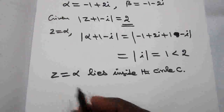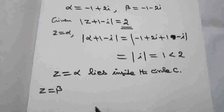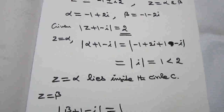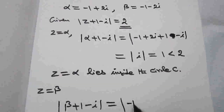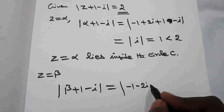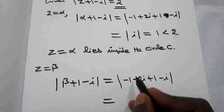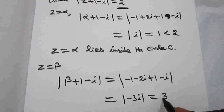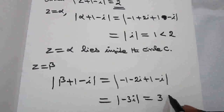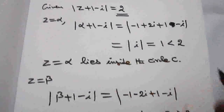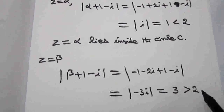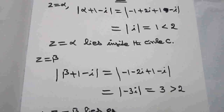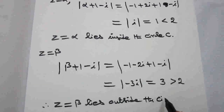For z = β = -1 - 2i: |β + 1 - i| = |(-1 - 2i) + 1 - i| = |-3i| = 3, which is greater than radius 2. Therefore z = β lies outside circle C.